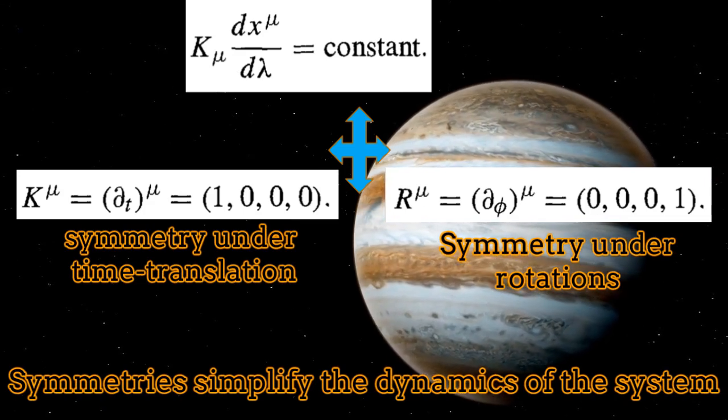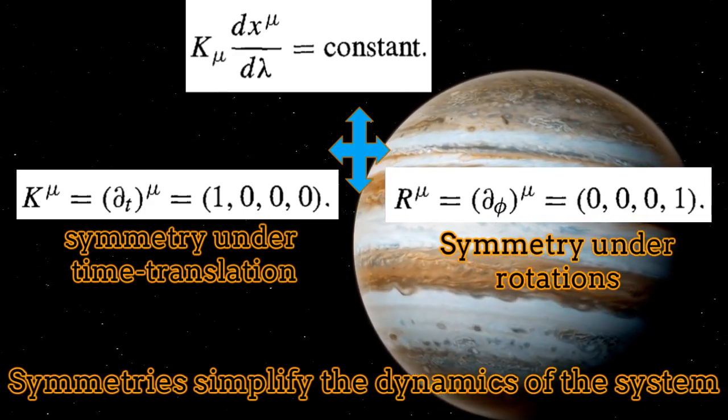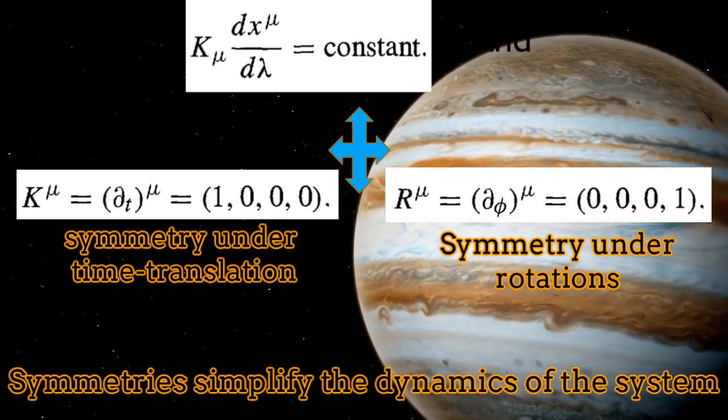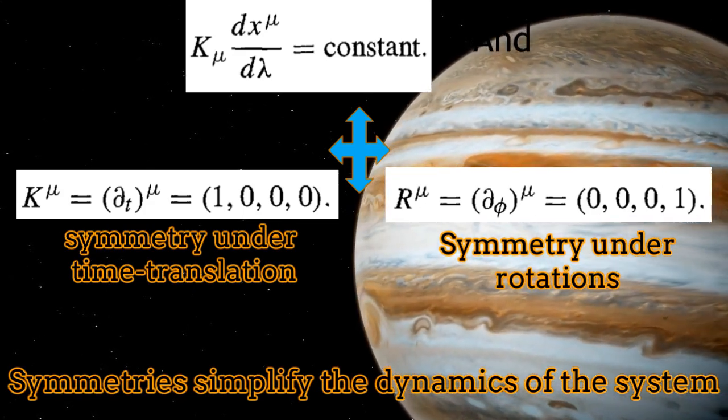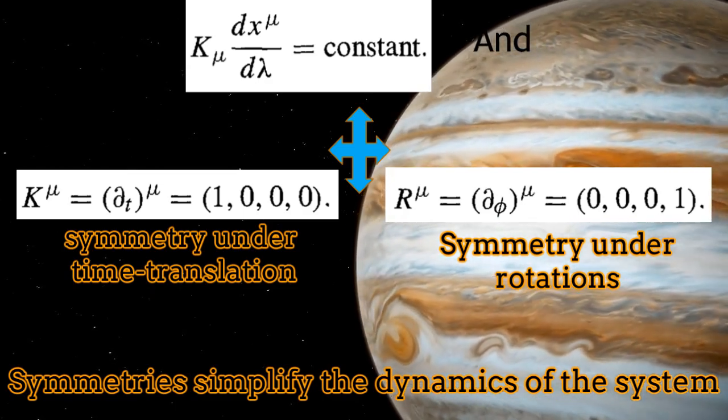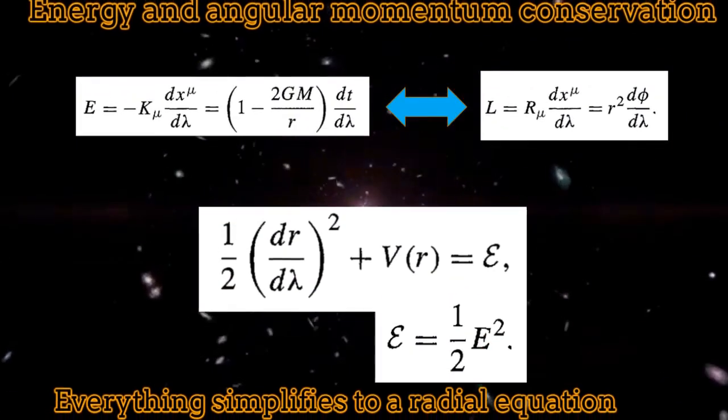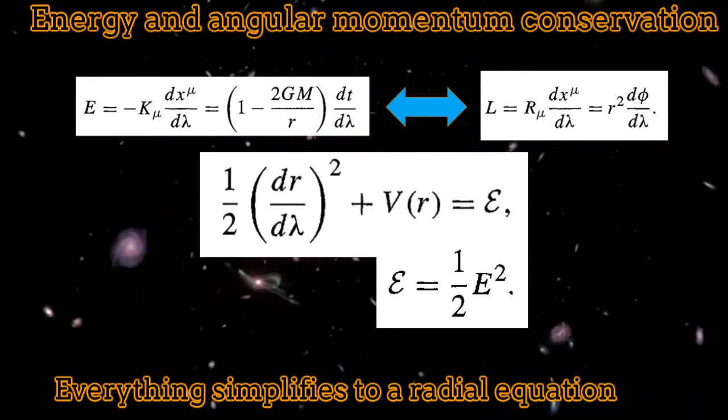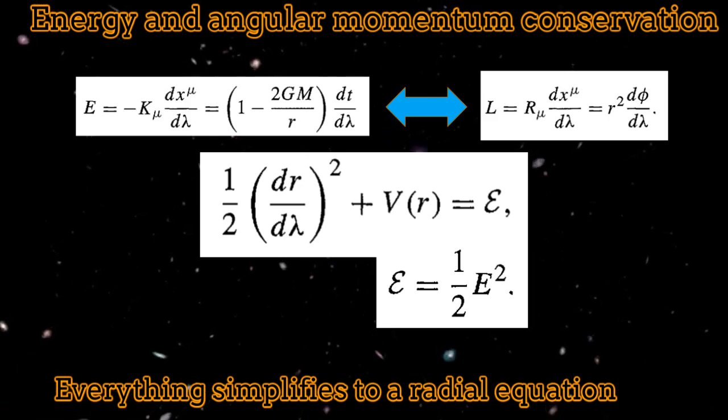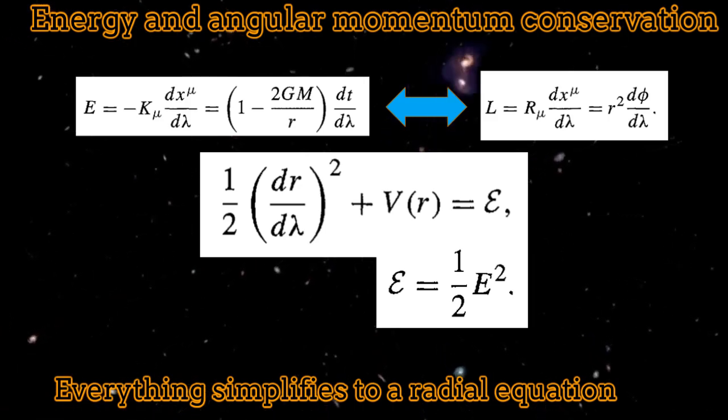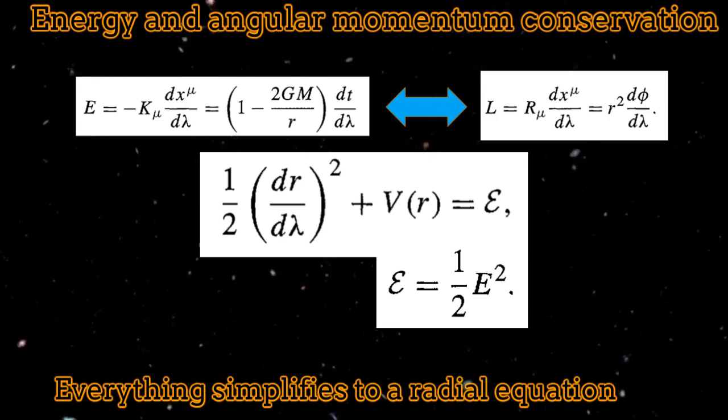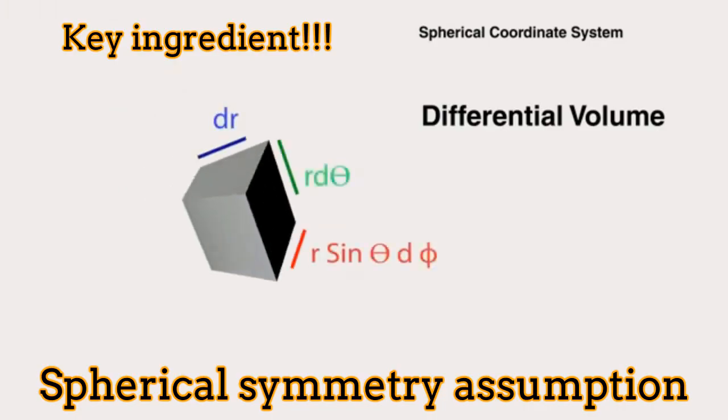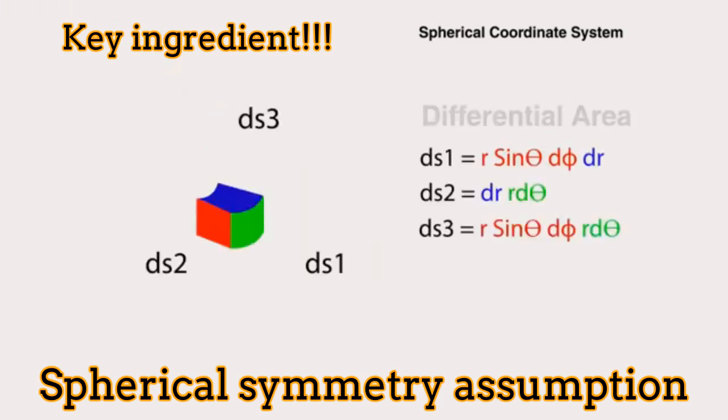The symmetries of the Schwarzschild solution simplify the dynamics of a test particle moving around the source. In this case, we have symmetry under time translation and symmetry under rotation. While the symmetry under time translation corresponds to the conservation of energy, the symmetry under rotation corresponds to the conservation of angular momentum. It comes out that this is one of the key ingredients for describing the geodesic of test particles moving around the source.